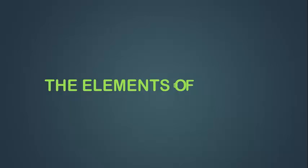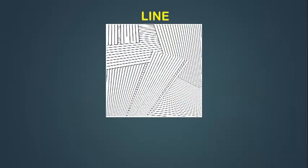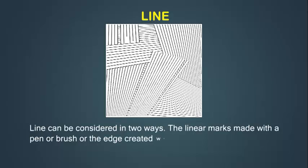The elements of design. Line can be considered in two ways: the linear marks made with a pen or brush, or the edge created when two shapes meet.